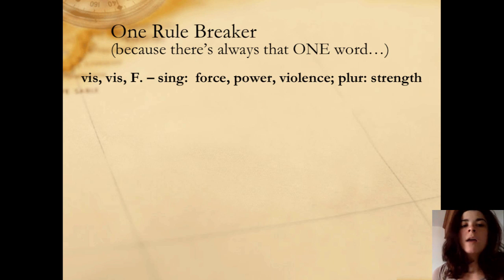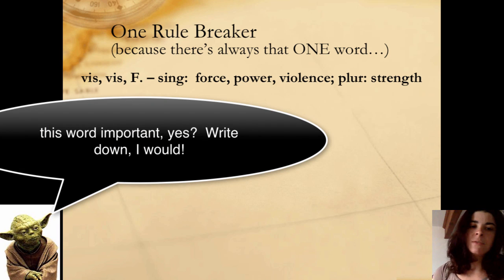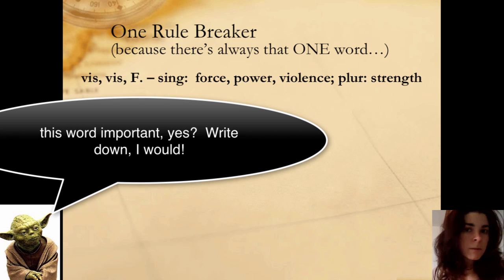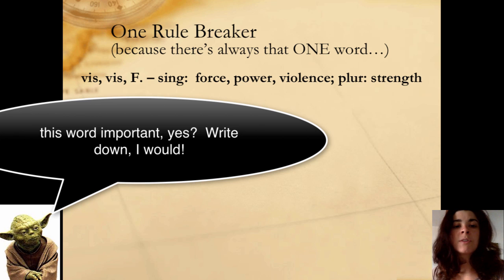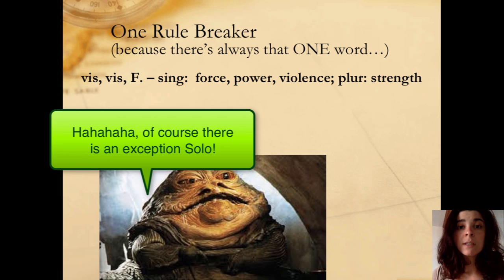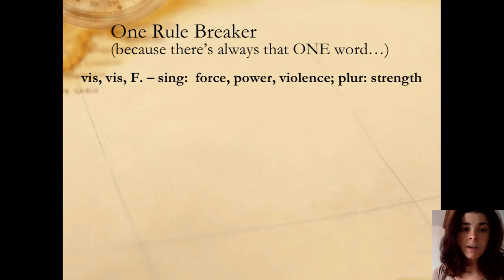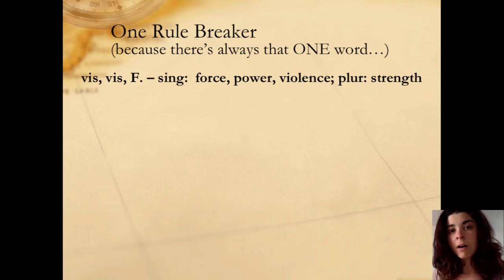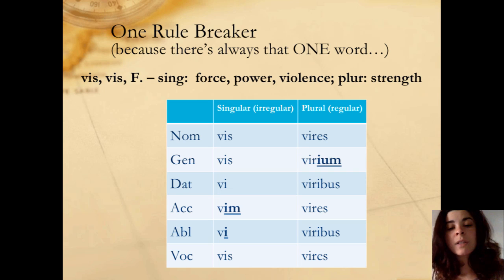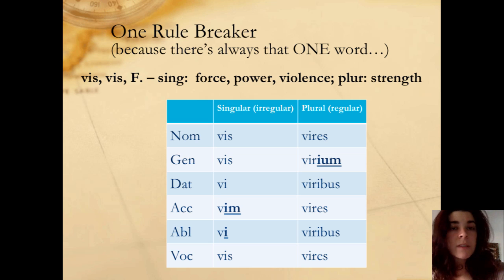However, there is one rule breaker, and that is VIS. VIS is an irregular noun — it does not follow the pattern as much, and it also has an irregular stem as well. We're going to look at how it declines, and I need you to write this down in your notes. It is important — I would star it. Because it is a word that shows up frequently in Latin, and because it's irregular, it's going to be important to remember how it declines. It starts out kind of normal, although V as your stem is a little bit short.